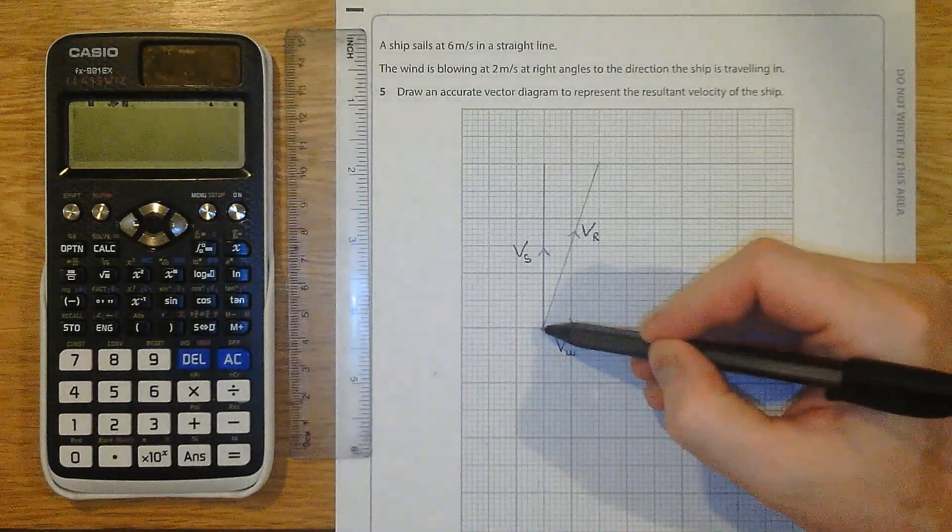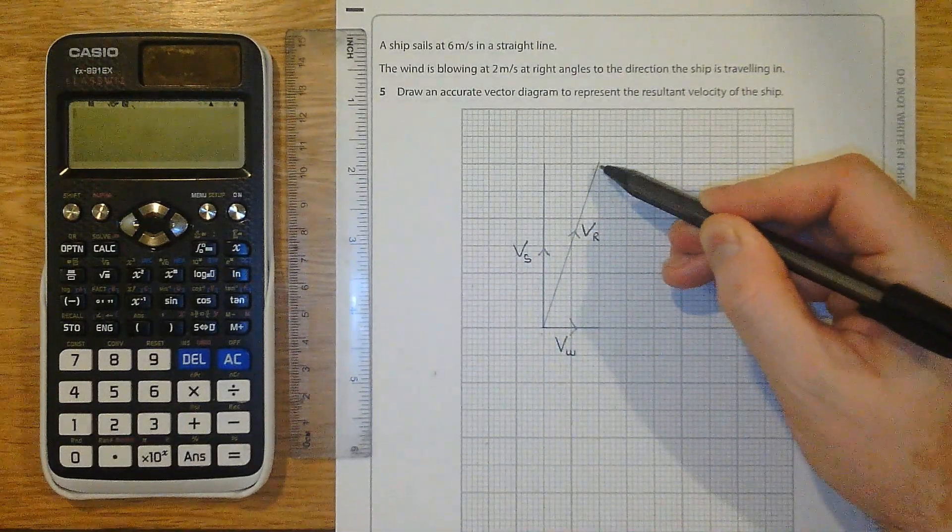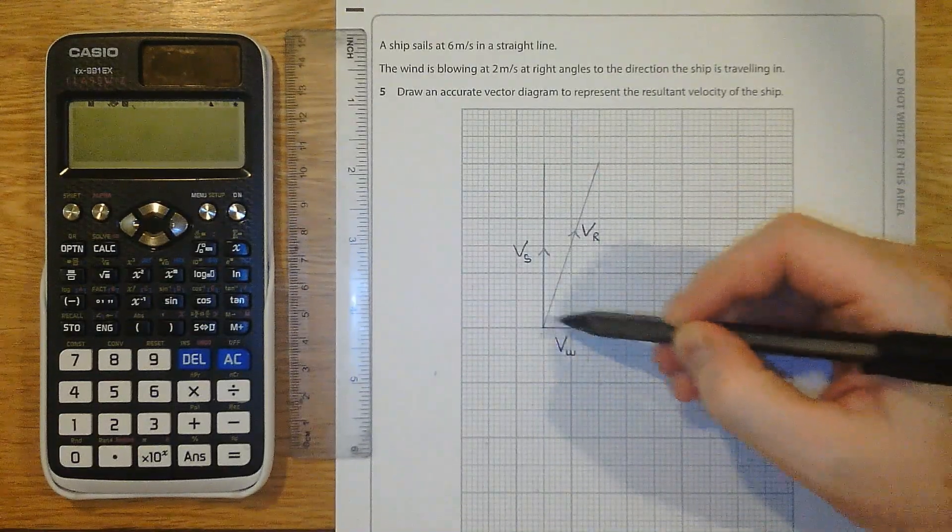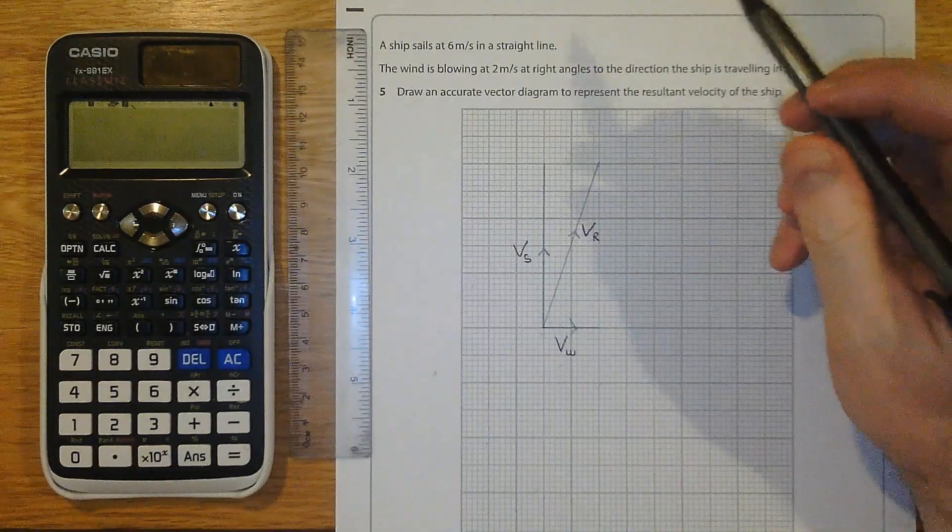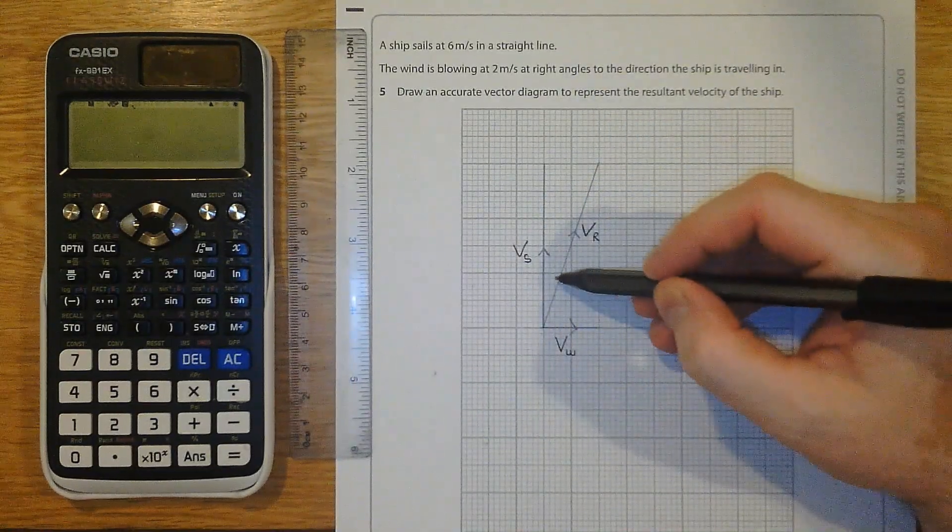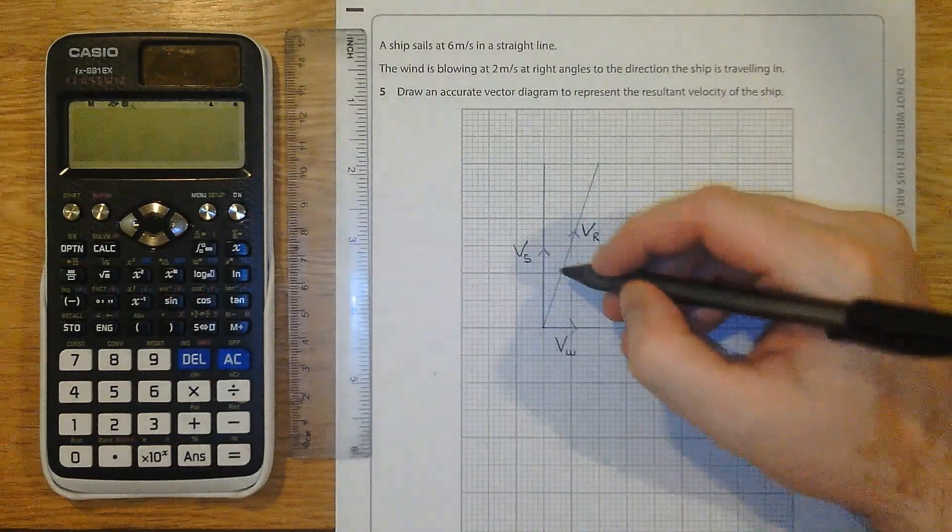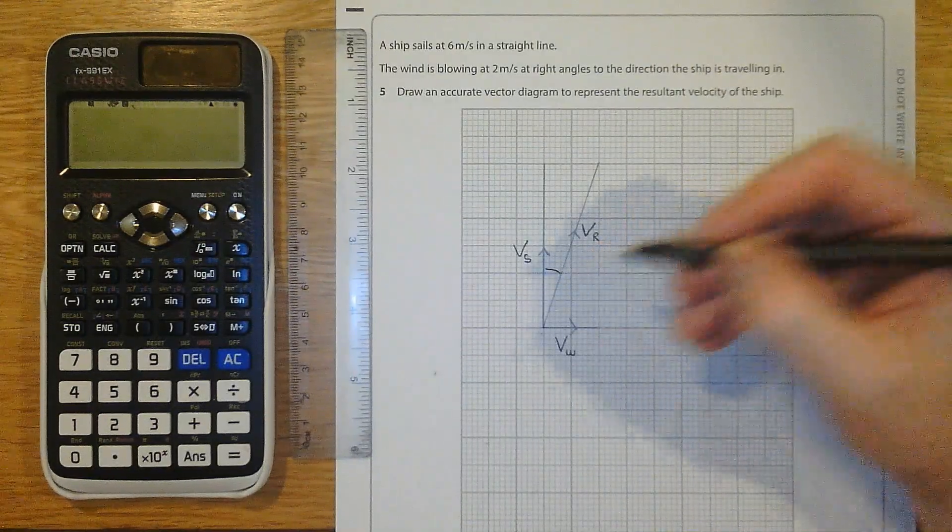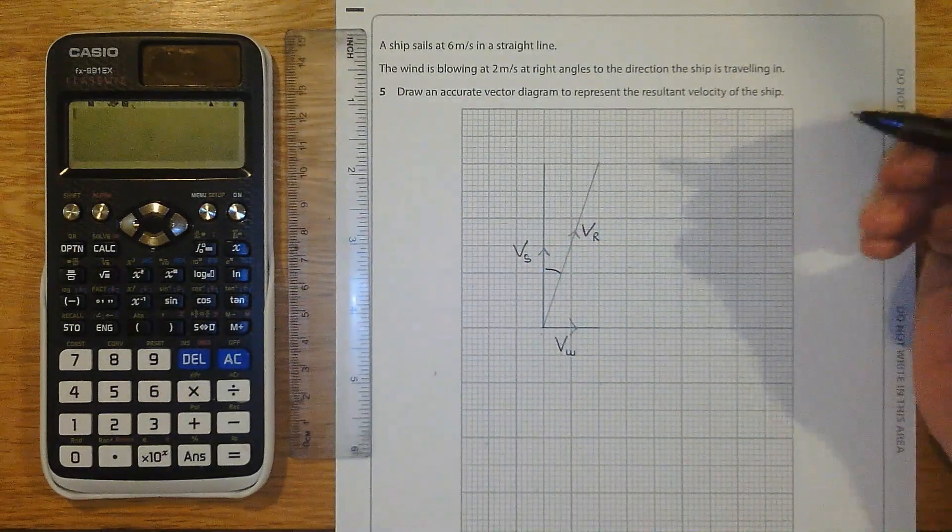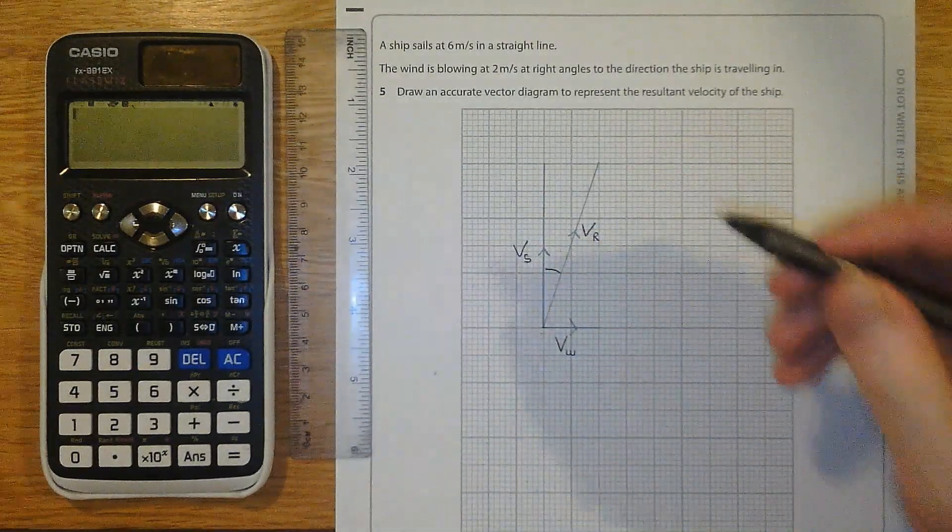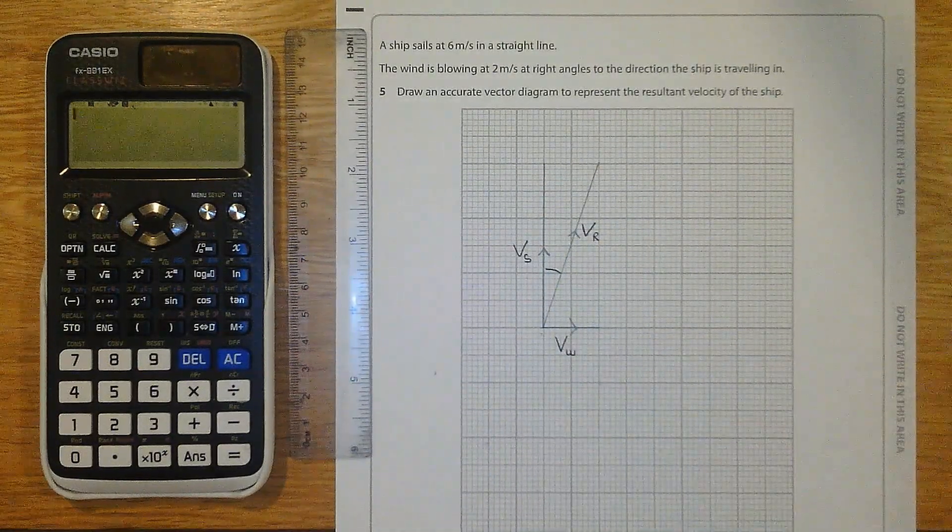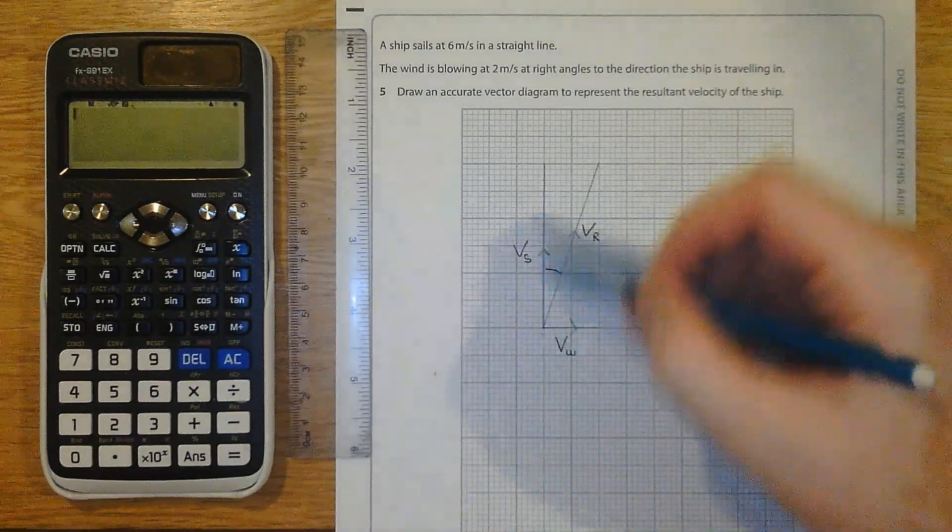I've not been asked to work out the length of this. If I was, I could use Pythagoras, 2 squared, 6 squared, add them and then square root. But I haven't been asked to. I've not been asked to work out the direction of travel. I could work that out by finding this angle here. If I wanted to do that, I would need to use some SOHCAHTOA, since these are at 90 degrees to each other. I'll talk more about that when I've shown the alternative layout. But remember, this is enough for full marks.